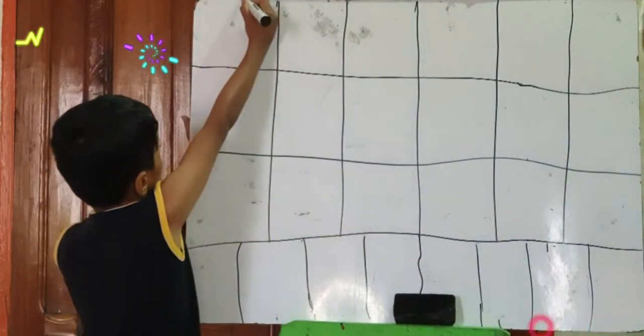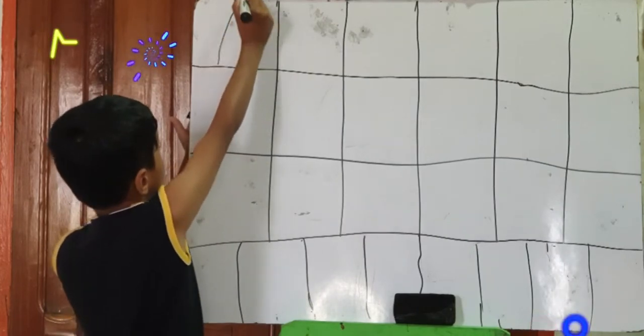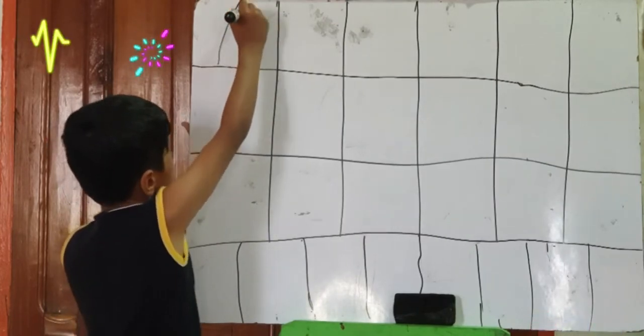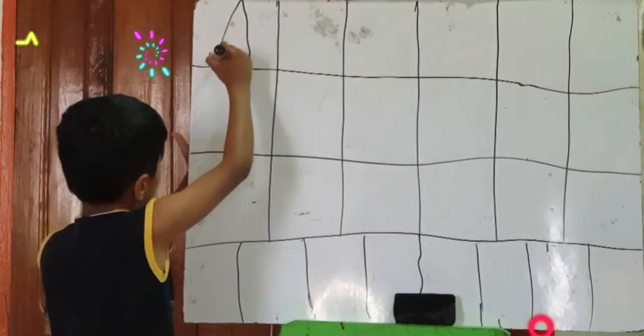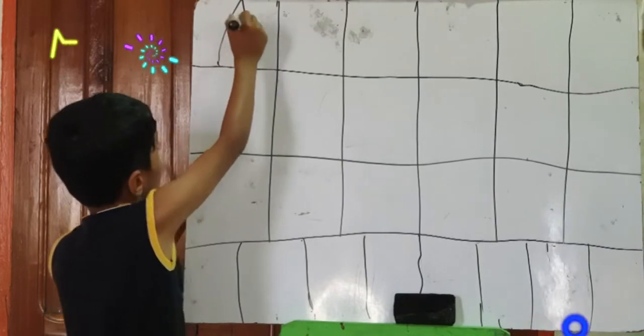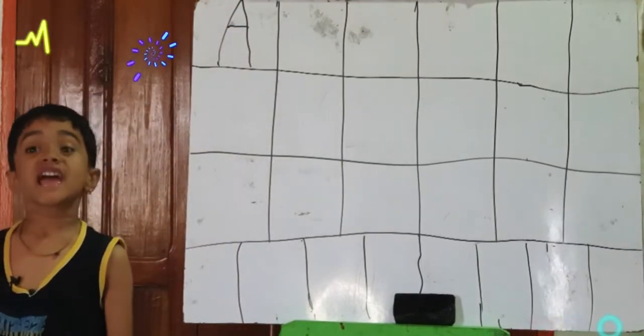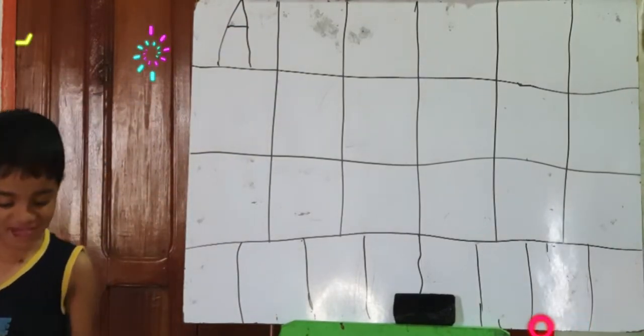One standing line, one standing line and one sleeping line. That is A.